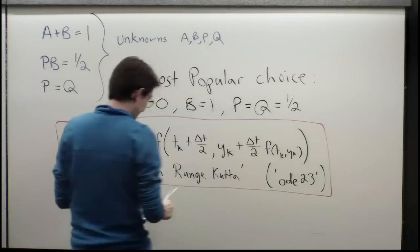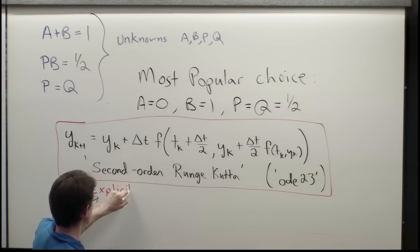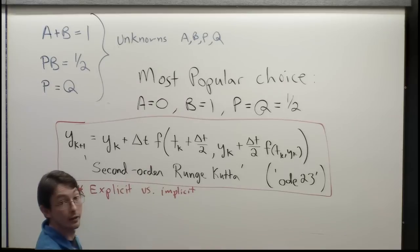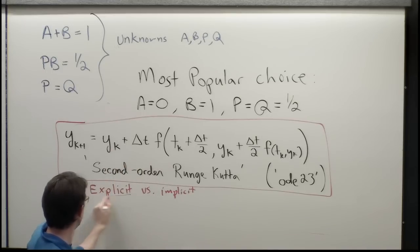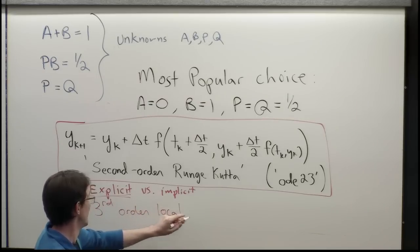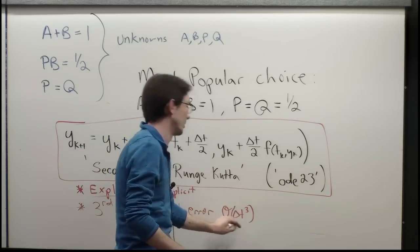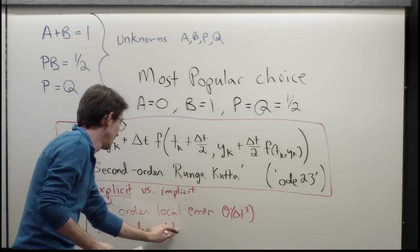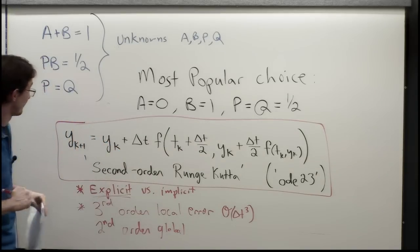One really nice thing about this is that it's explicit versus implicit — I don't need to solve any nonlinear function to find y_{k+1}; everything on the right-hand side is in terms of t_k and y_k. It has third-order local error, which means order delta-t cubed locally, which means it's second-order global. That's in fact why it's called second-order Runge-Kutta — we care about the global error properties.